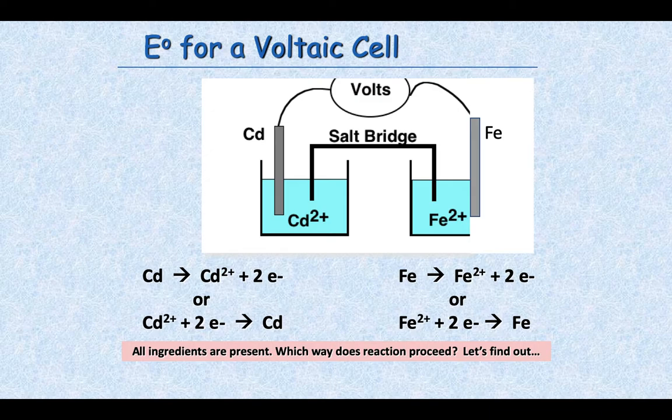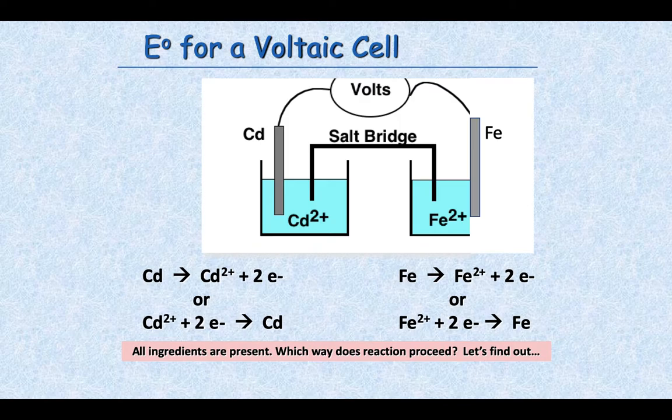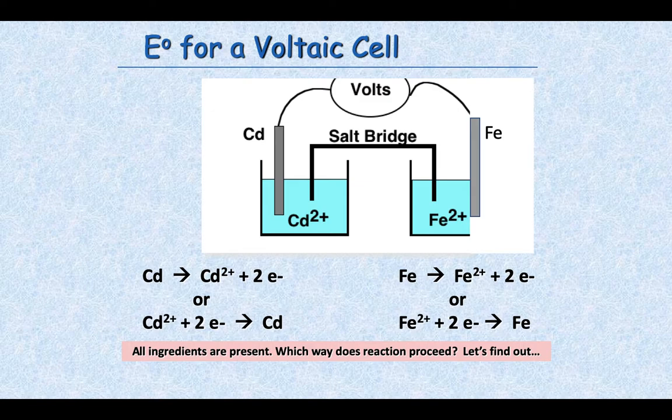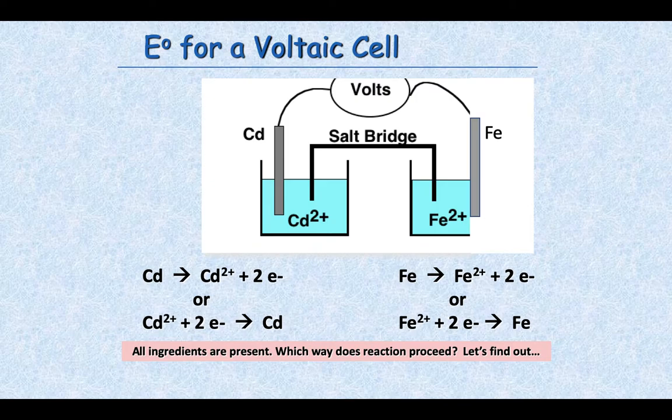So what if we gave you this combination of chemicals? A piece of cadmium in a cadmium solution, a piece of iron in an iron solution. So we have all these chemicals available. What direction is it going to proceed? And what would the E-cell value be?